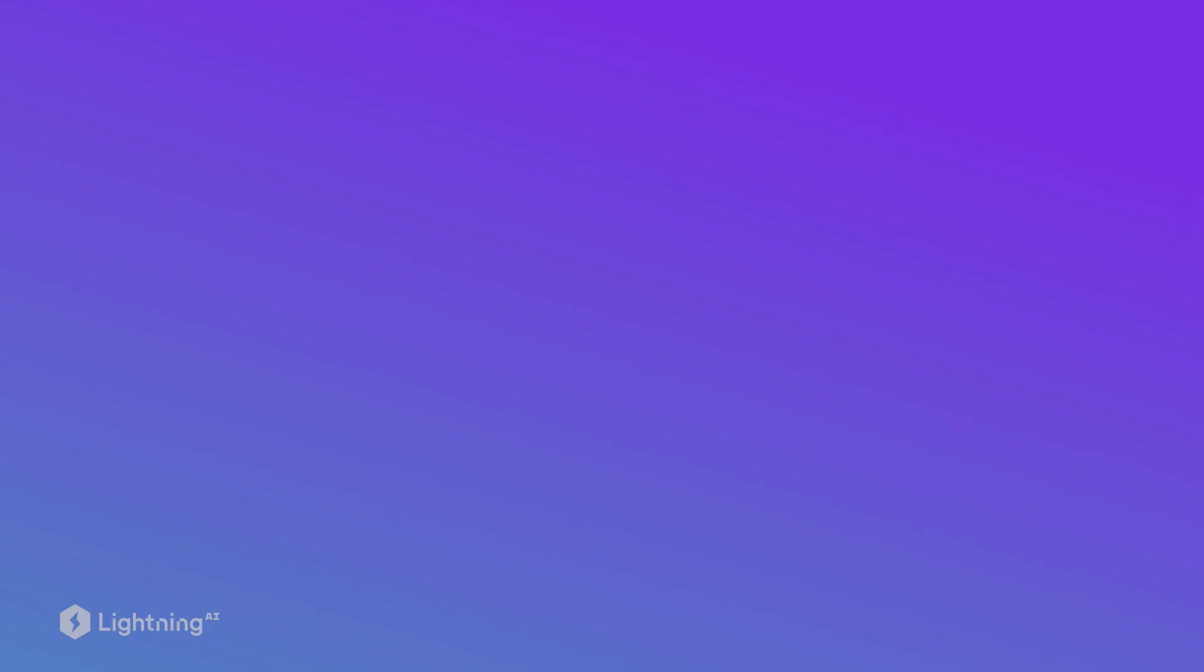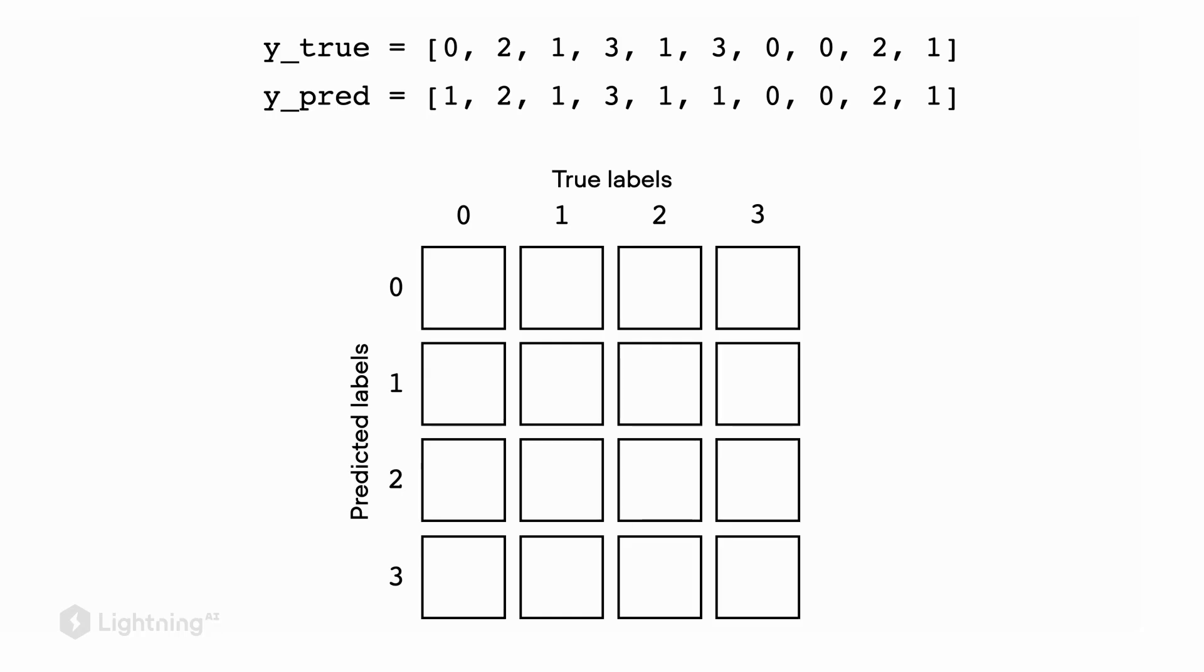In practice, I also always find it very useful to compute a so-called confusion matrix. The confusion matrix is a matrix that shows the predicted labels and the true labels. So each cell counts how many times the predicted and the true label match.